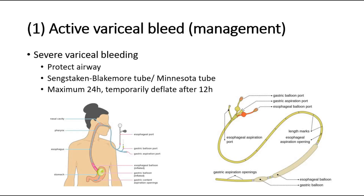In severe variceal bleeding, we protect the airway using the Sengstaken-Blakemore tube, also known as the Minnesota tube. The tube is passed through the nose into the esophagus until reaching the stomach, with an inflated esophageal balloon and an inflated gastric balloon. The tube is kept in for a maximum of 24 hours, with temporary deflation after 12 hours to prevent pressure necrosis within the esophagus. It is used for uncontrollable bleeding and consists of four components: a gastric balloon, an esophageal balloon, a gastric opening, and an esophageal opening.